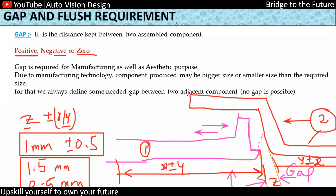A gap is necessary because it is not possible to manufacture any component exactly and accurately in repeated production. More than 100 vehicles are assembled per day in any plant, and components like a door panel or pillar trim will not be manufactured exactly to the design size every time. There will always be some deviation in the gap.